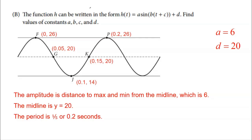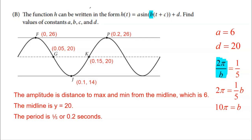So A = 6 and D = 20. For the B value, the formula for period is 2π/B. Setting 2π/B = 1/5 and solving: multiply both sides by B, then divide by 1/5 (multiply by 5), giving B = 10π. So A = 6, B = 10π, D = 20. The only remaining unknown is C, the phase shift.